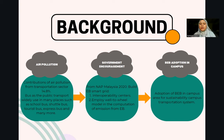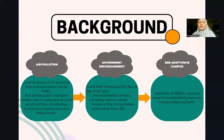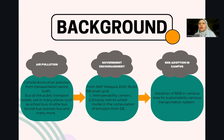The second point is government encouragement. In Malaysia, we have NAP Malaysia 2020, which is a policy to build an EV infrastructure grid — the interoperability centre — and also to employ the well-to-wheel model in the computation of EV emissions. The last point is the trend in the adoption of electric buses in campuses to have a sustainable campus transportation system. In Malaysia, universities like UITM use electric buses as campus transportation.